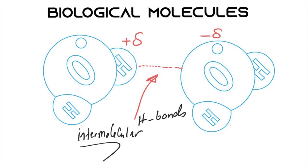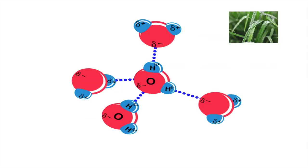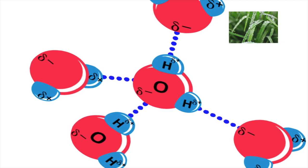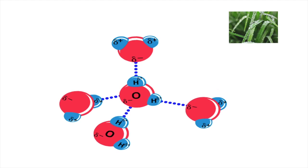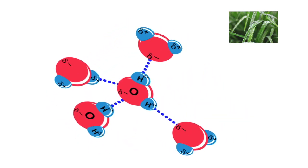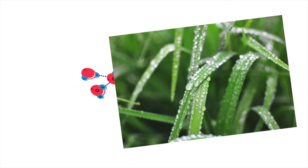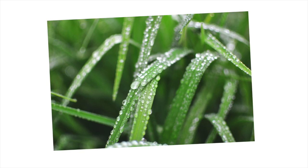Hydrogen bonds attract the water molecules very well and change many of their properties. In this picture, we see a network of hydrogen bonds between many different water molecules. You can always see that it's the hydrogen and the oxygens that attract each other. As a result, all of these water molecules are attracted to each other — this is known as cohesion. Cohesion is the attraction between water molecules among each other, and this results in water always clumping closely together and forming drops.